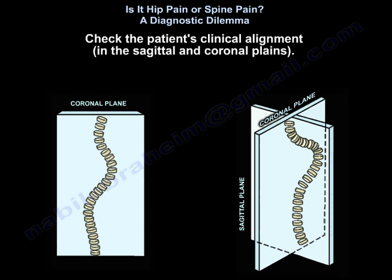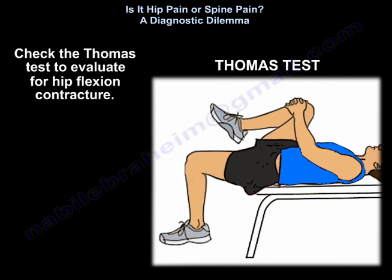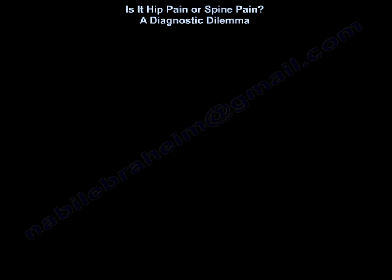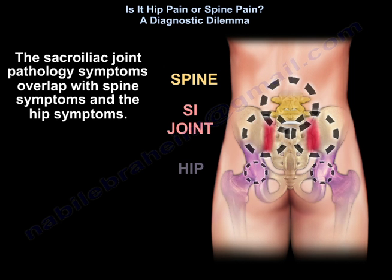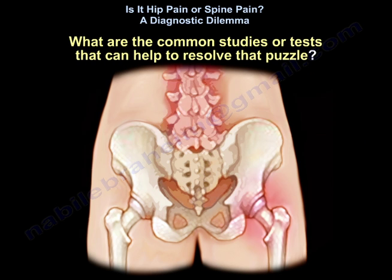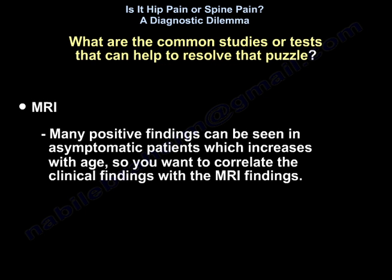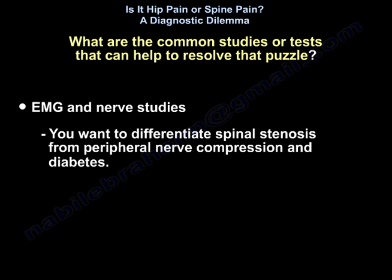Check the patient's clinical alignment in the sagittal and coronal planes. Check the Thomas test to evaluate for a hip flexion contracture. Sacroiliac joint pathology symptoms overlap with both spine and hip symptoms. For diagnostic tests, MRI can show many positive findings in asymptomatic patients — findings that increase with age — so you want to correlate clinical findings with MRI. Nerve studies can help differentiate spinal stenosis from peripheral nerve compression and diabetes.